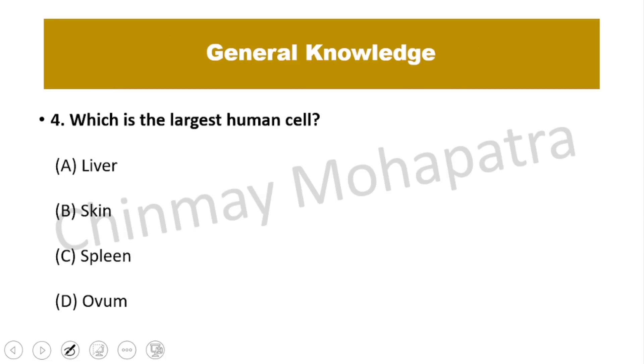Question number 4: Which is the largest human cell? The right answer is the ovum — the female egg cell is the largest human cell.